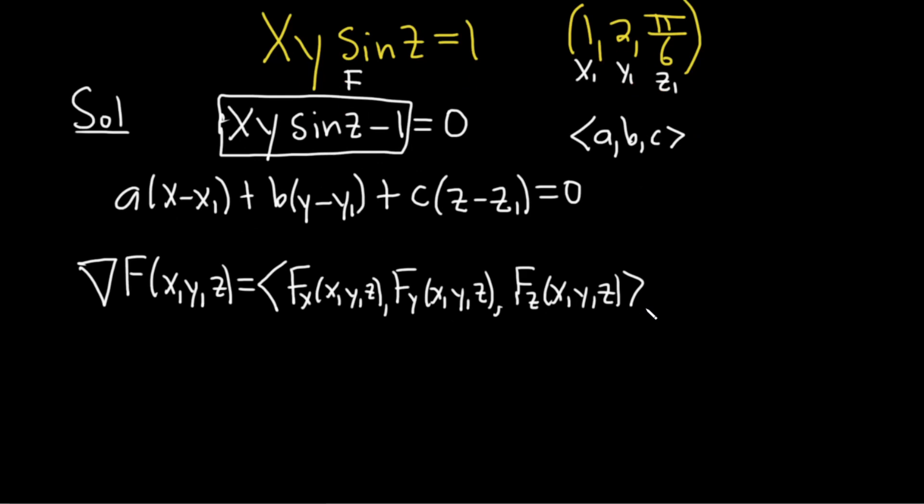Okay, so when we're finding partials, the way it works is partial with respect to x, everything is constant except the x. So this y sine z, it's constant. So the derivative of x is 1, but we simply get y sine z. And then the derivative of negative 1 is 0 because it's a constant. We're looking for fy, so everything is constant except the y. The derivative of y is 1, so we're left with x sine z. And the derivative of negative 1 is 0.